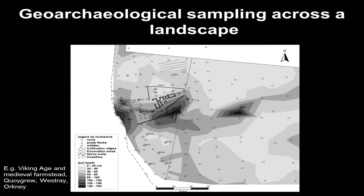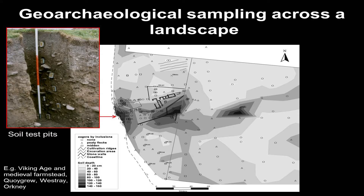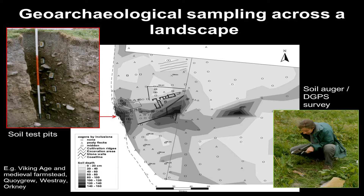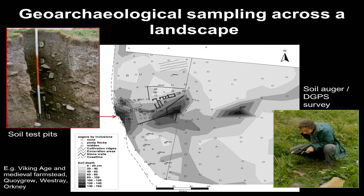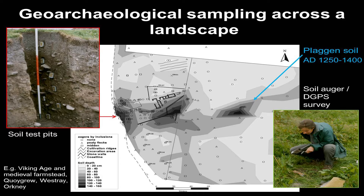To give an example close to home, this is Orkney on the island of Westray, where James Barrett was working on the site of Khoigru. A landscape study was done around that Viking Age and medieval site — test pitting, for example — and all of these little dots on this map are the results of an intensive auger survey, where you take small cores of the soils and look at them without having to dig lots and lots of test pits. What you can see here are the different depths of soil from that auger survey, and the final result was that there was a deep soil that had been artificially thickened — a field developed in the 13th and 14th century.